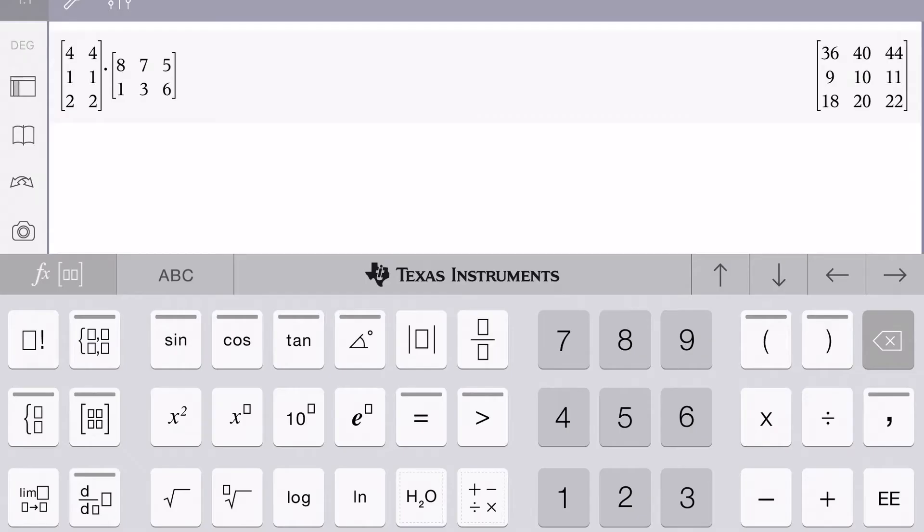So the commutative property is not true for matrices. So yes we did C times E and now we're going to do E times C and they're not going to be the same thing.